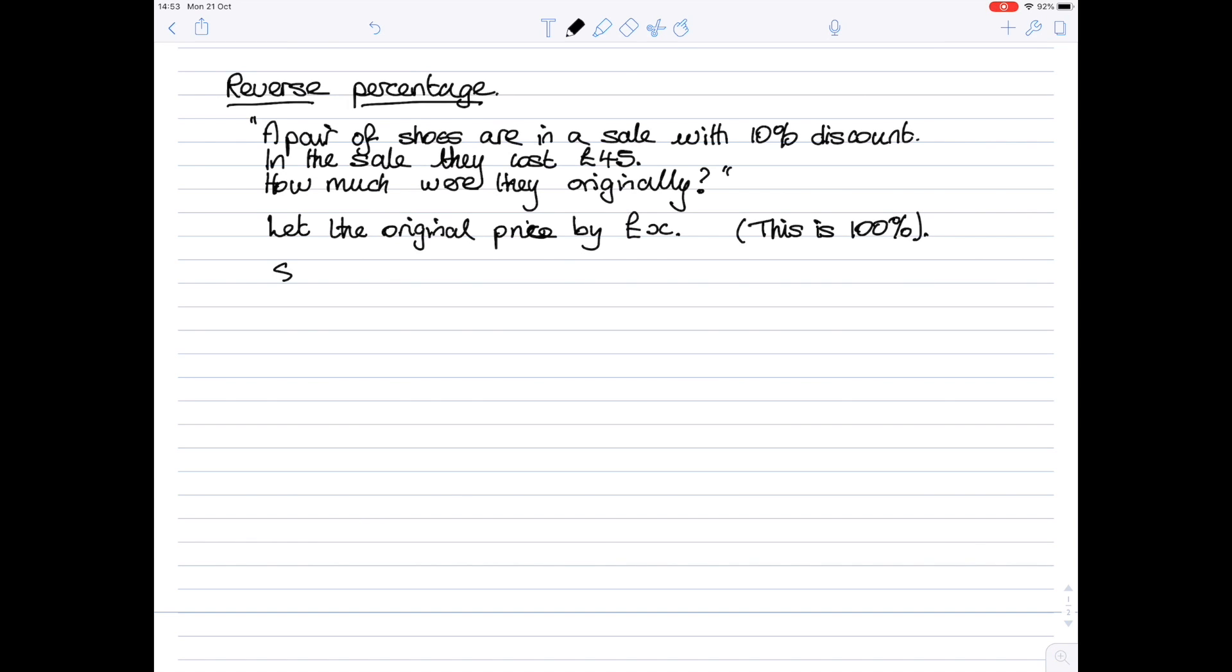The shoes are reduced by 10%, which means the sale price is 90% of the original price. The 90% came from doing 100 minus 10. So the sale price is 90% of the original price. Now the sale price is £45, so we actually know that 90% of x is 45.